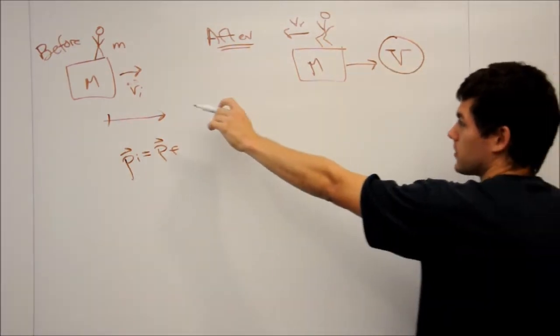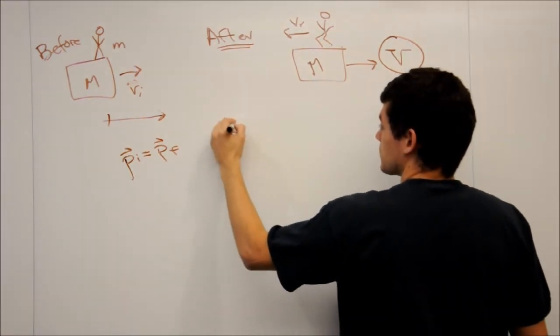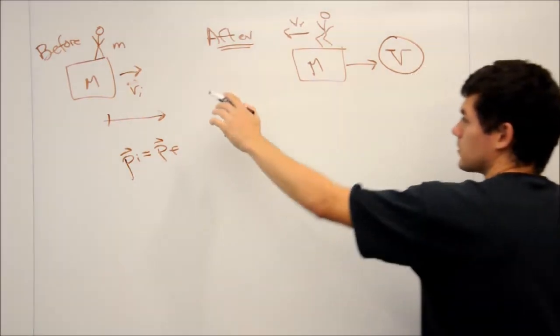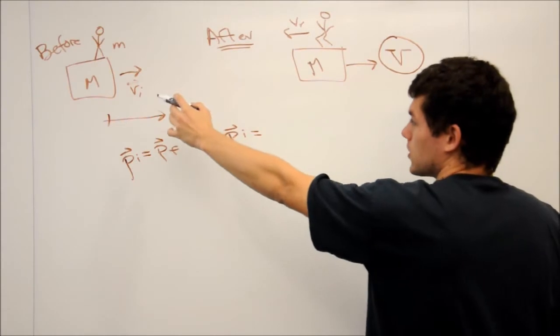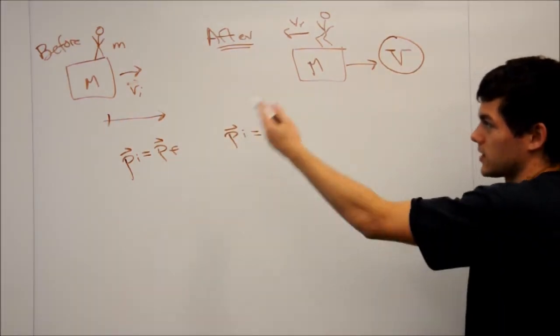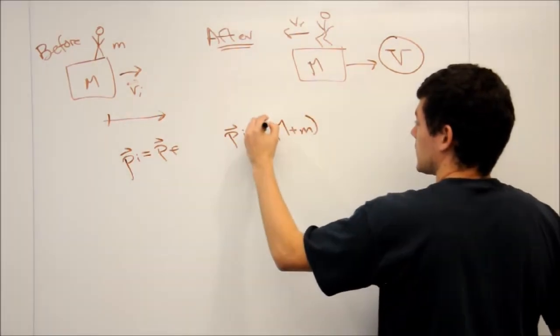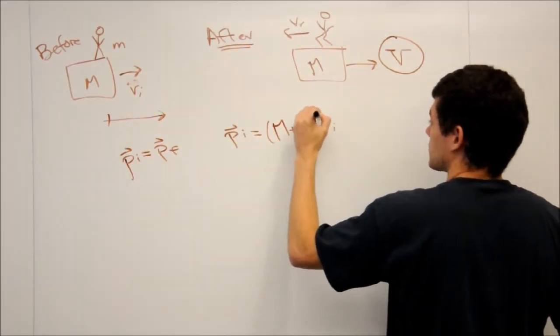First we're going to calculate the momentum in the first situation. So this is PI. All we have to do for this is add their masses together and then multiply it by the velocity, because they're both moving together. So that's going to be big M plus little m times VI.